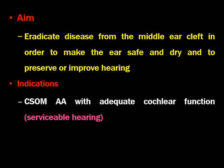The indications are CSOM atticoantral disease with adequate cochlear function, that is serviceable hearing. This is very important. When the patient does not have serviceable hearing, or when there is very little chance of restoring hearing, then we perform radical mastoidectomy surgery. But if we think the patient's hearing can be improved or preserved, we perform modified radical mastoidectomy surgery.